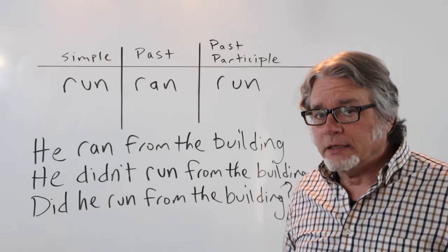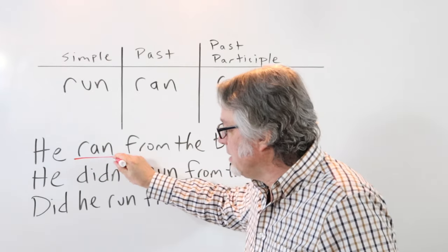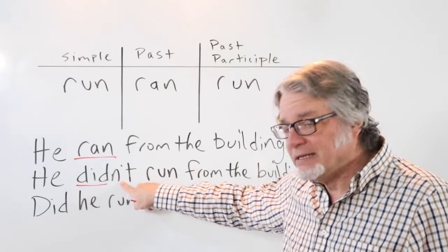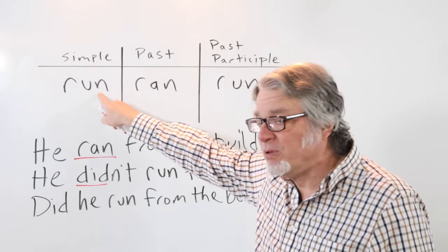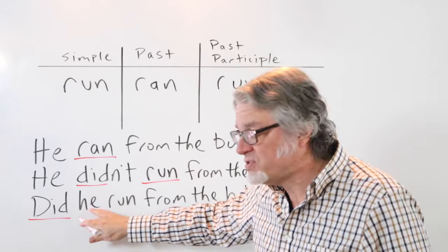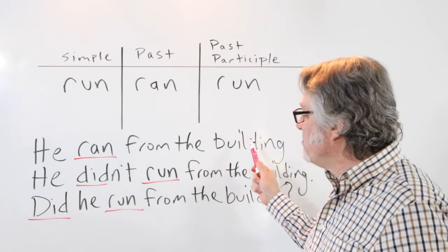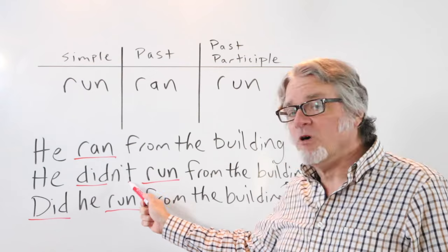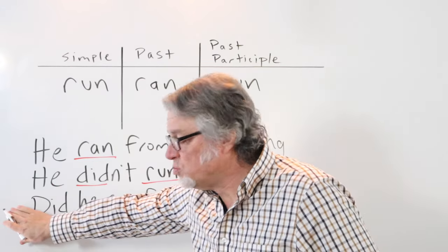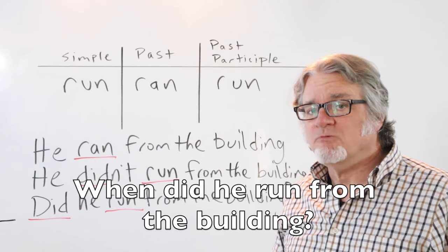Here's the verb 'run': run, ran, run. In the past tense: He ran from the building. In the negative, use the helping verb 'did' and 'not,' and then the simple form of the verb: He didn't run from the building. As a question, the helping verb goes before the subject and then the main verb is in the simple form: Did he run from the building? You can also put a question word here: Why did he run from the building? When did he run from the building?